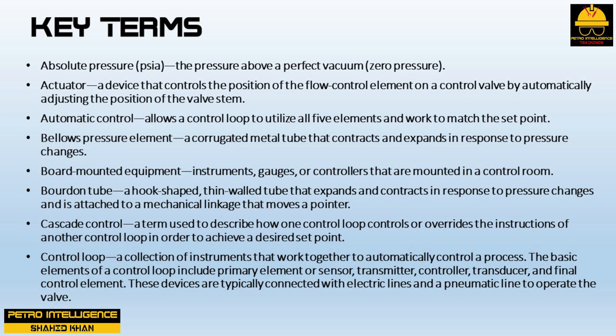Board-mounted equipment are instruments, gauges, or controllers mounted in a control room. A Bourdon tube is a hook-shaped thin-walled tube that expands and contracts in response to pressure changes and is attached to a mechanical linkage that moves a pointer. Cascade control describes how one control loop controls or overrides the instructions of another control loop to achieve a desired set point. A control loop is a collection of instruments that work together to automatically control a process; basic elements include primary element or sensor, transmitter, controller, transducer, and final control element.